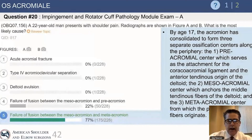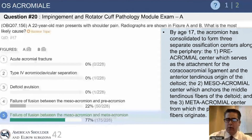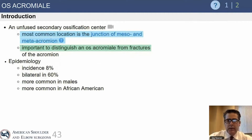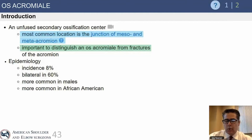The correct answer is an os acromiale, which is basically a failure of fusion that happens in the late teenage to early adult age. The most common location is between the meso and the meta acromion. An os acromiale is an unfused secondary ossification center. It's important to distinguish os achromials from fractures — they are usually incidental findings and not directly related to pain.